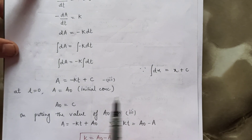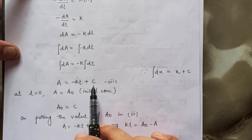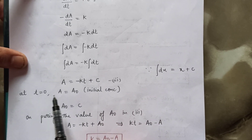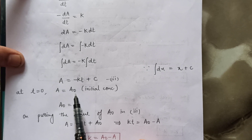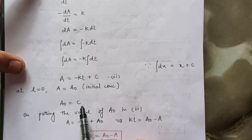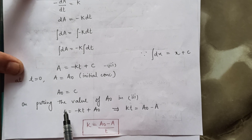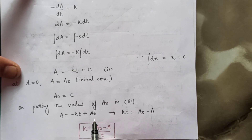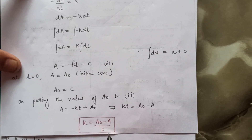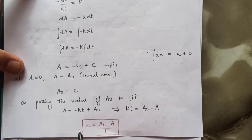We have to calculate the value of c because we cannot define an expression with an unknown constant. At time equals zero, the concentration of A is the initial concentration, so a-naught equals c. Putting the value of a-naught into equation 3 gives a equals minus kt plus a-naught. Rearranging: k equals a-naught minus a upon t. This is the expression for the rate constant for zero-order reaction.